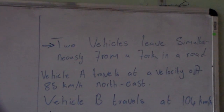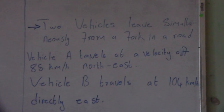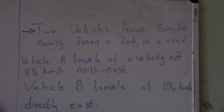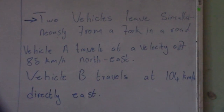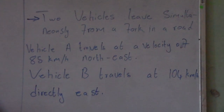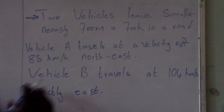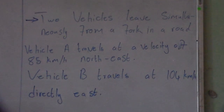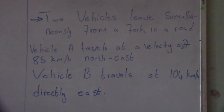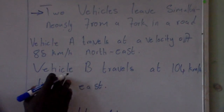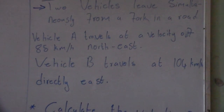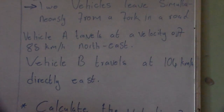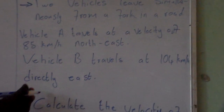Today we are going to look at relative velocity. For example, we have two vehicles that leave simultaneously from a fork in a road. Vehicle A will travel at a velocity of 85 km per hour north-east, and vehicle B will travel at 104 km per hour directly west.